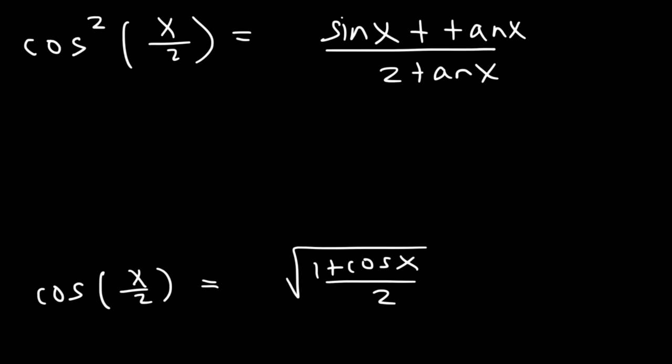The formula is the square root of 1 plus cosine x divided by 2. So just like we did before, we're going to square both sides to get rid of the radical on the right. On the left, we have cosine squared, which is what we have here. So we can replace our original expression with 1 plus cosine divided by 2.